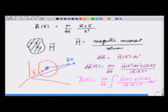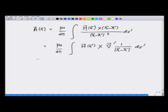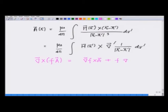Now we are going to do some vector manipulations and show that M(r prime) cross (r minus r prime) over |r minus r prime| cubed is equivalent to M(r prime) cross the gradient with respect to the prime variable of 1 over |r minus r prime|. We use the vector identity: curl of (f times a) equals gradient of f cross a plus f times curl of a.